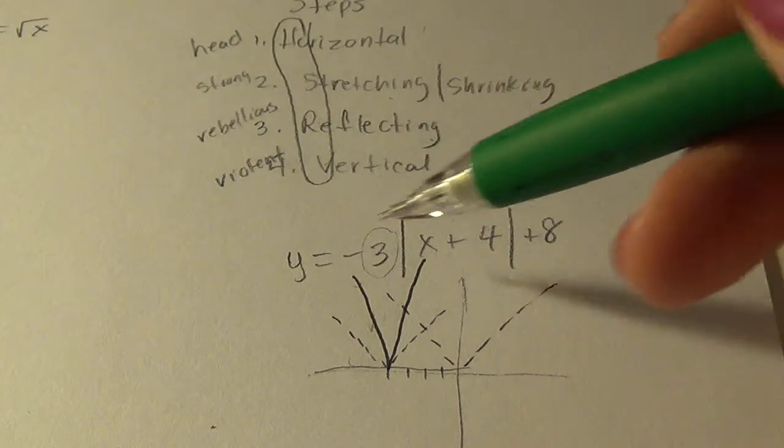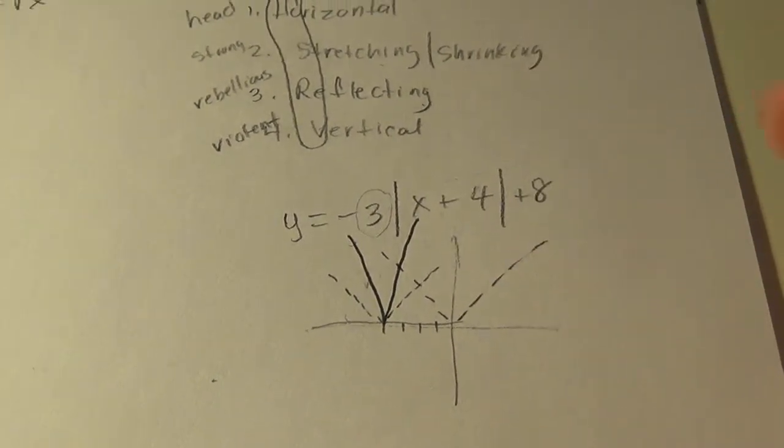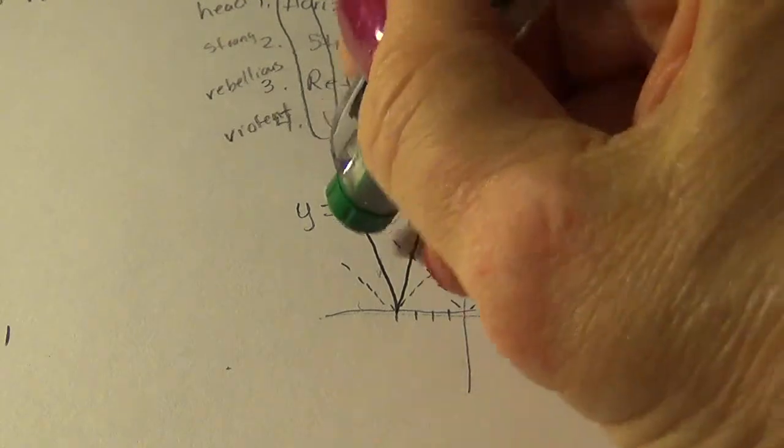Then we're going to reflect. So this negative sign out here, outside of the function, reflects across,